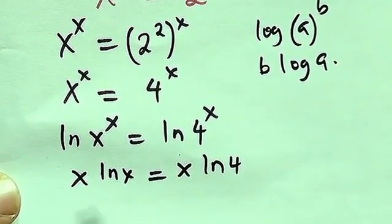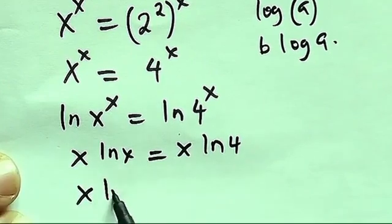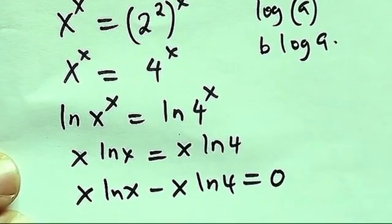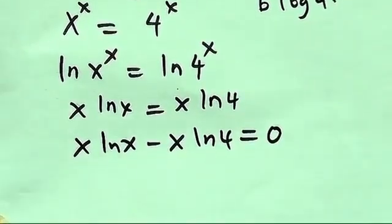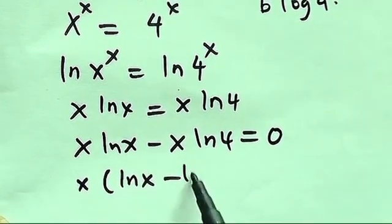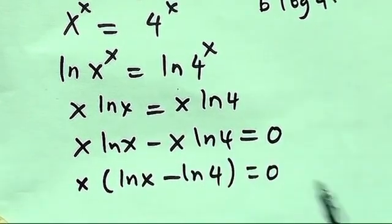So now from there, the next thing we're going to do is we try to send this to this. So we have x ln x minus x ln 4 then equals to what? Equals 0. So now from there we try to factorize. We have x outside. We have ln x then minus ln 4 then equals 0.